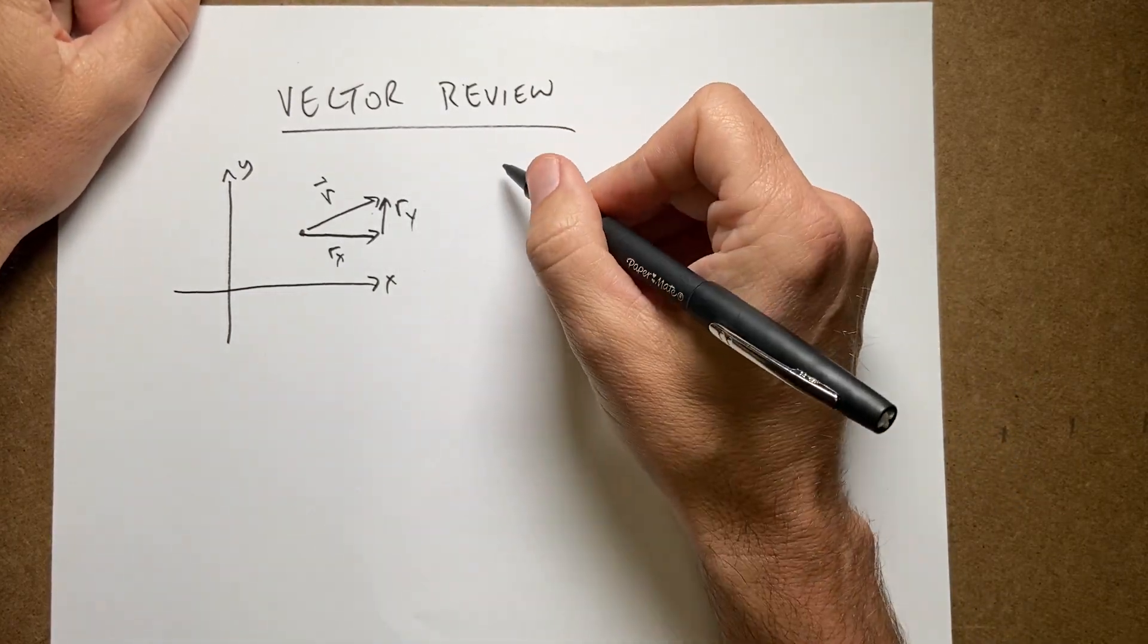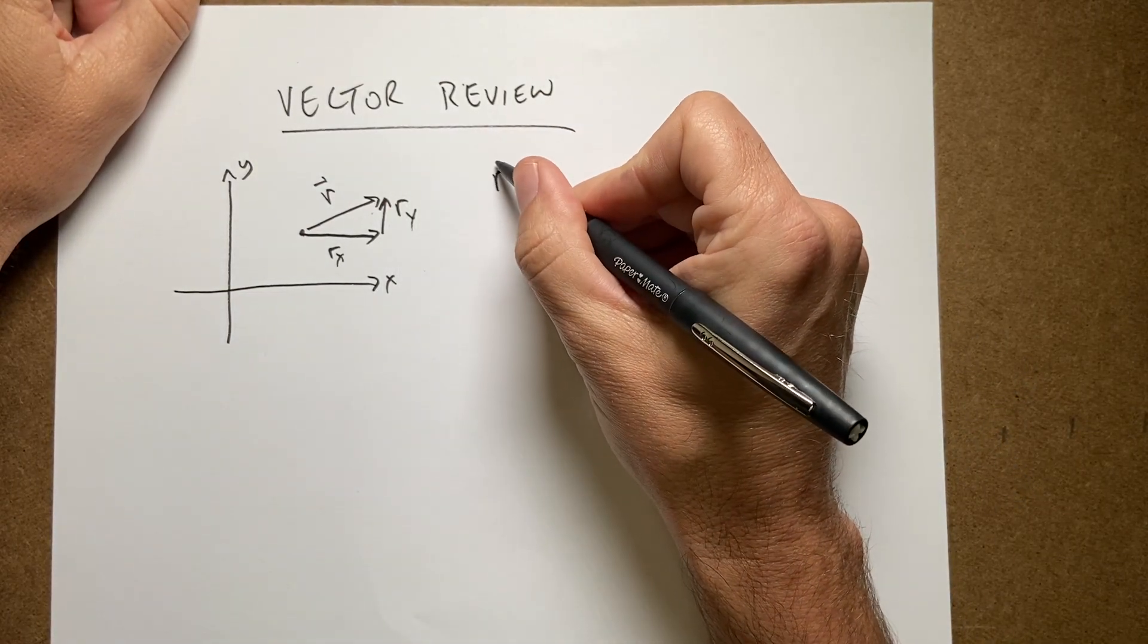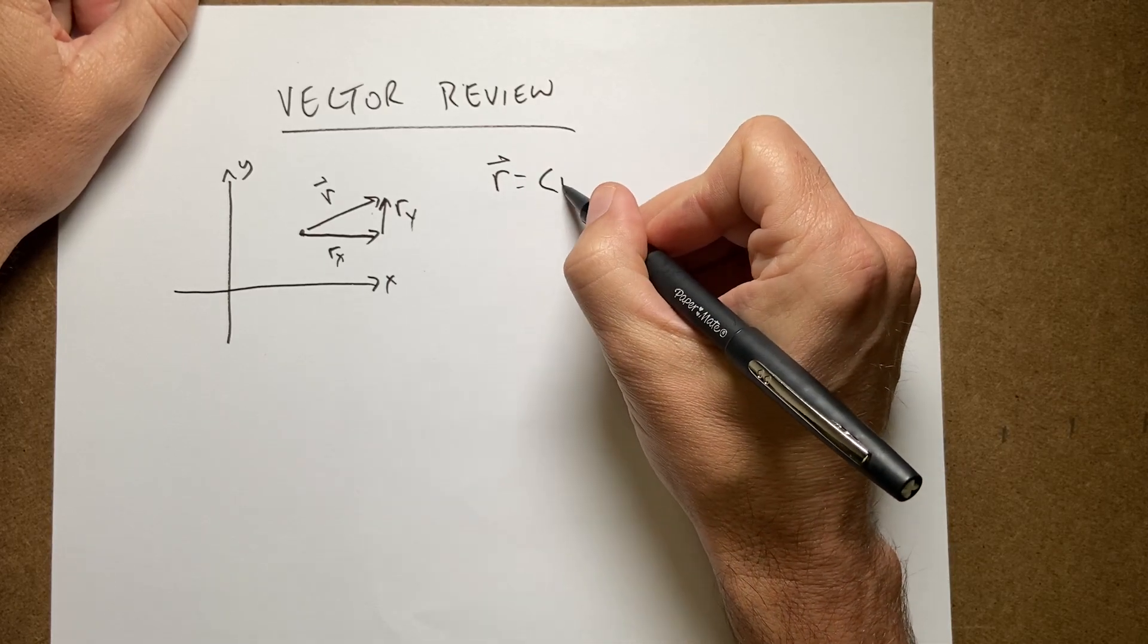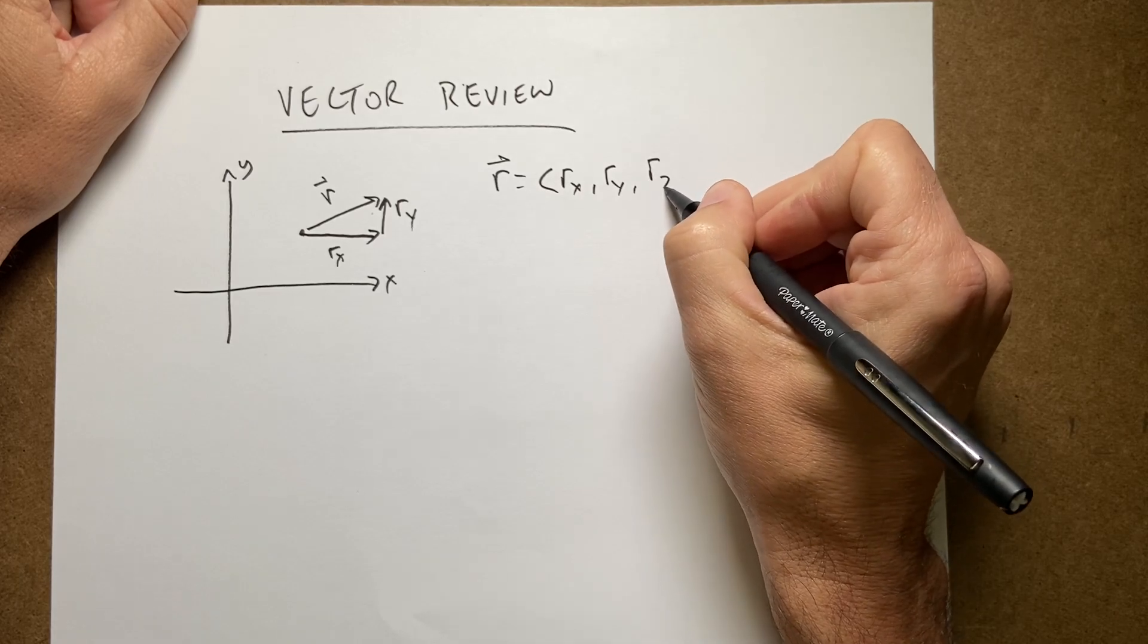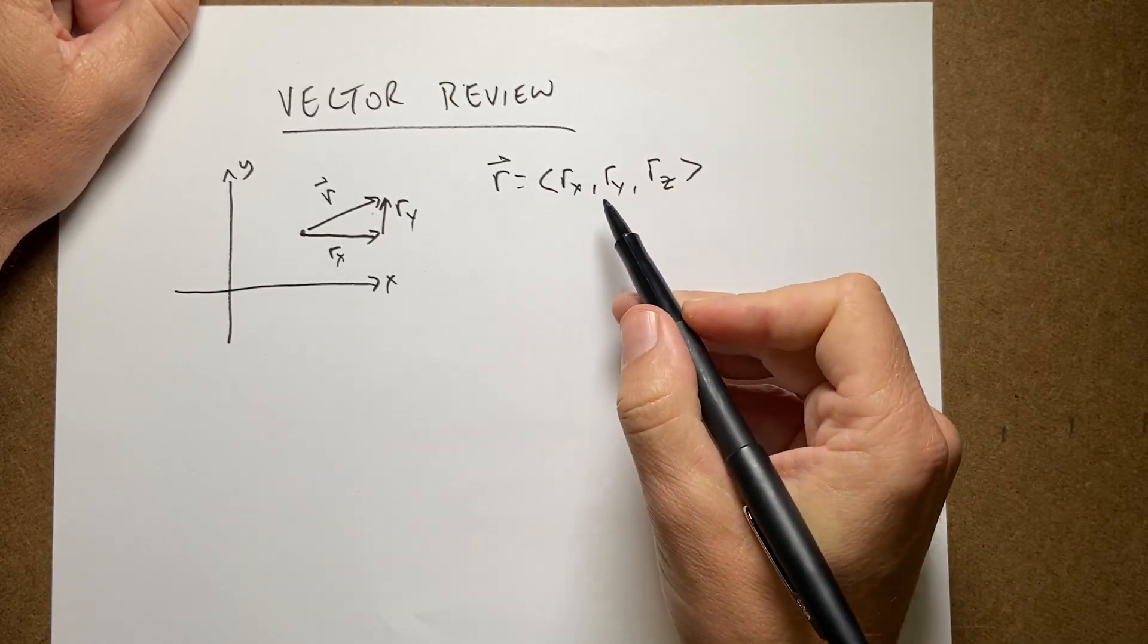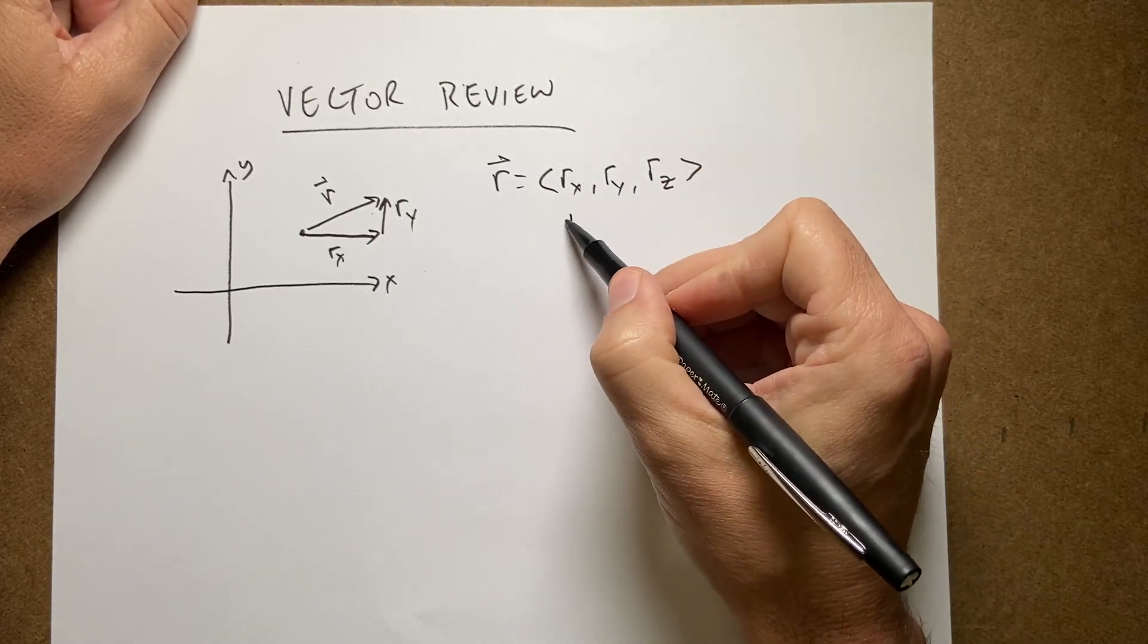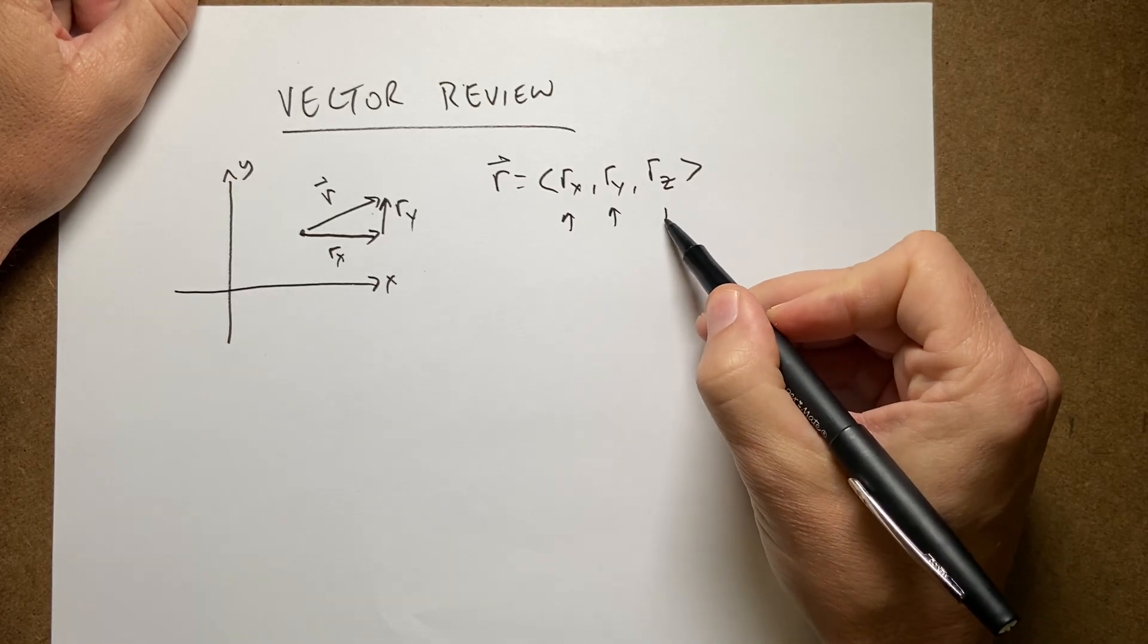So how do we represent a vector? The best way is to say this. The vector r is rx, ry, rz. So this is one way to do it, but we need to say what the x component, the y component, and the z component are.